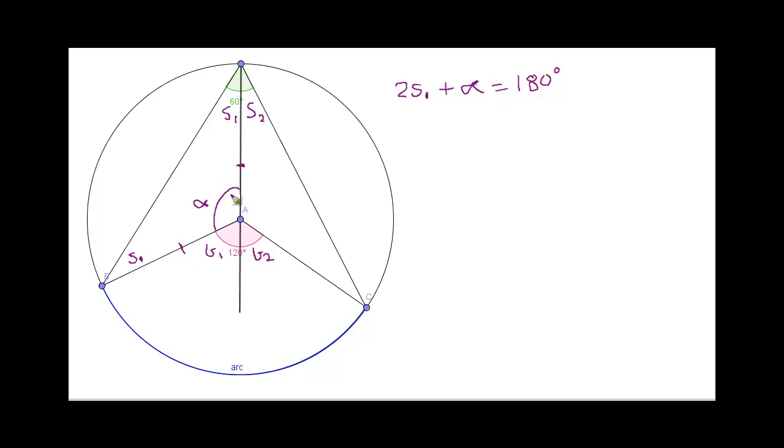And if we look at this again, we can actually draw up another equation. Because we know that the angle of a straight line is 180 degrees. So, below this equation, we can write alpha plus B1 equals 180 degrees.